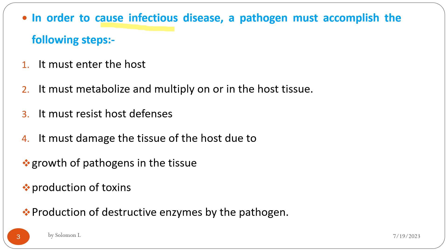In order to cause infectious disease, the pathogen or infectious agent must accomplish the following steps: it must enter the host; it must metabolize and multiply on or in the host tissue; it must resist the host's defense mechanisms; and it must damage the tissue of the host — due to growth of the pathogen, production of toxic chemicals, or production of digestive enzymes by the pathogen.